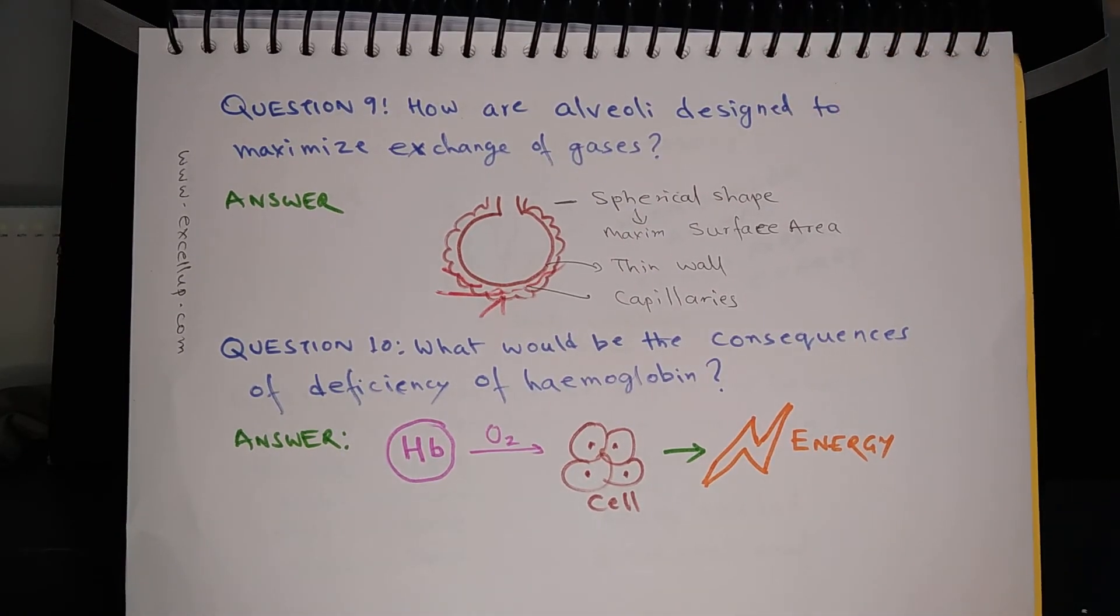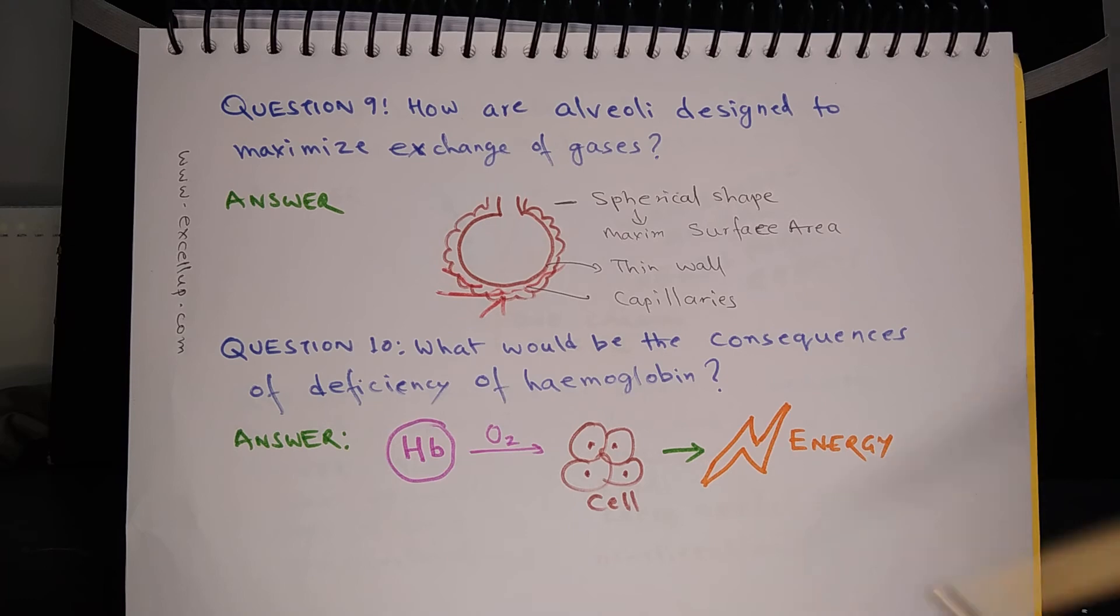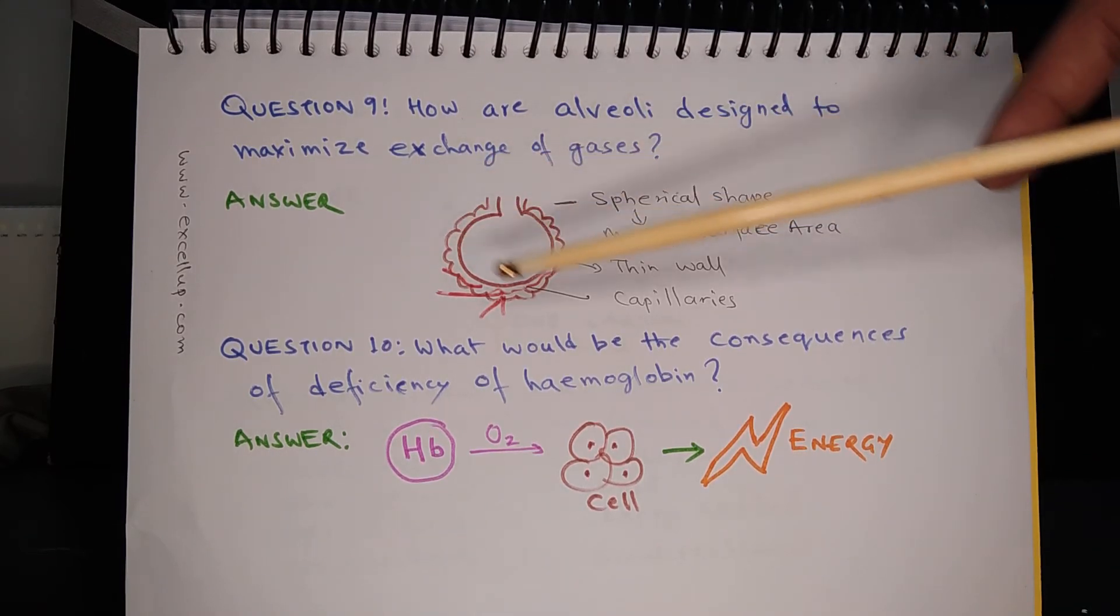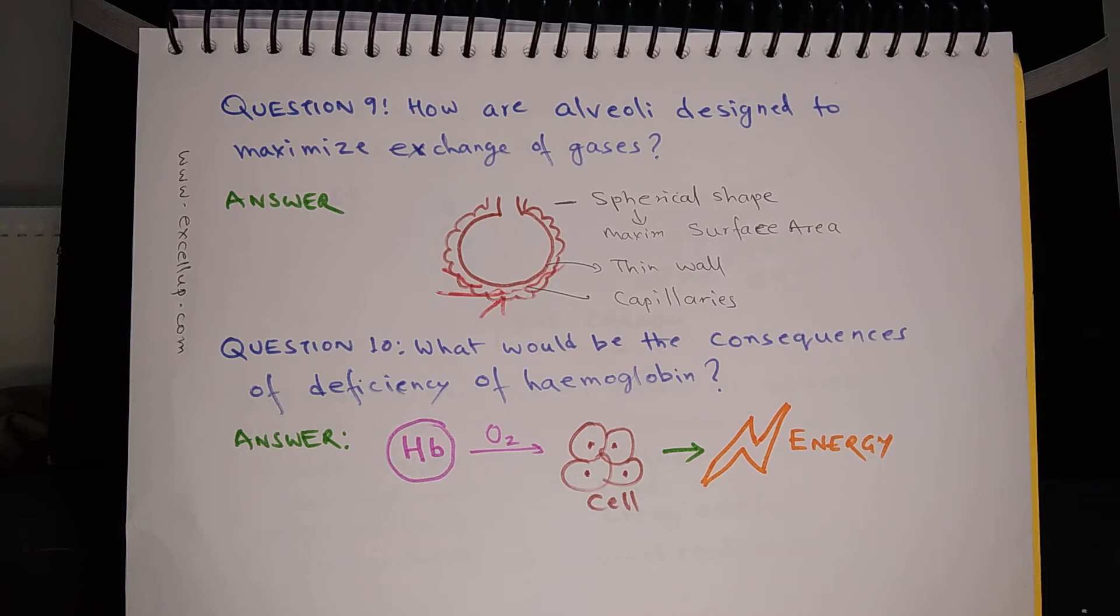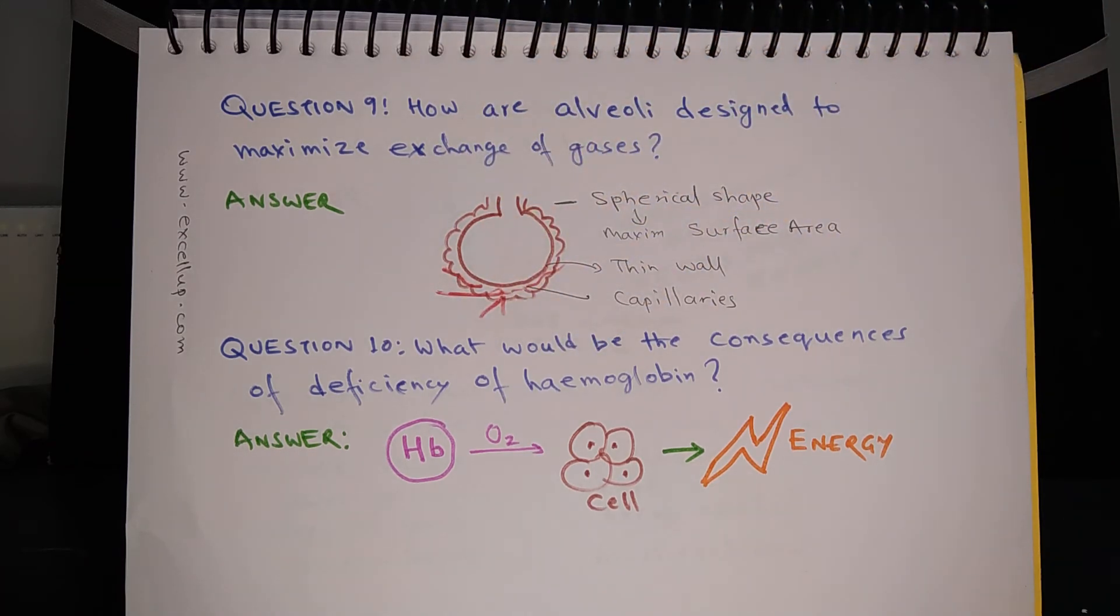Question 9: How are alveoli designed to maximize exchange of gases? This figure shows the structure of alveoli. The shape of alveoli is spherical, and because of spherical shape it gives maximum area in the minimum possible volume. This gives maximum surface area for exchange of gases. The wall of alveoli is thin, and because of thin wall, exchange of gases becomes easier. Alveoli are richly supplied with blood capillaries, and during exchange of gases in alveoli, carbon dioxide goes out of blood and oxygen gets in the blood.